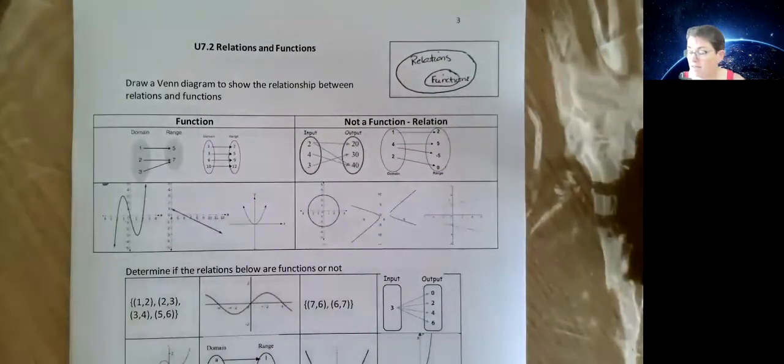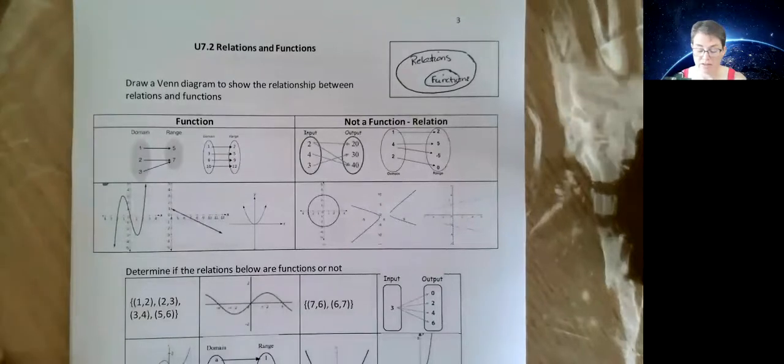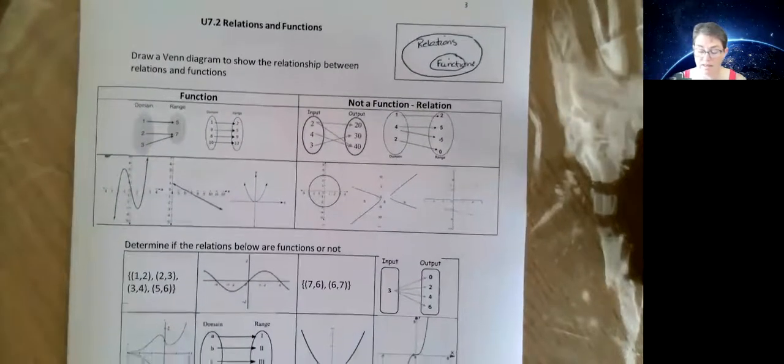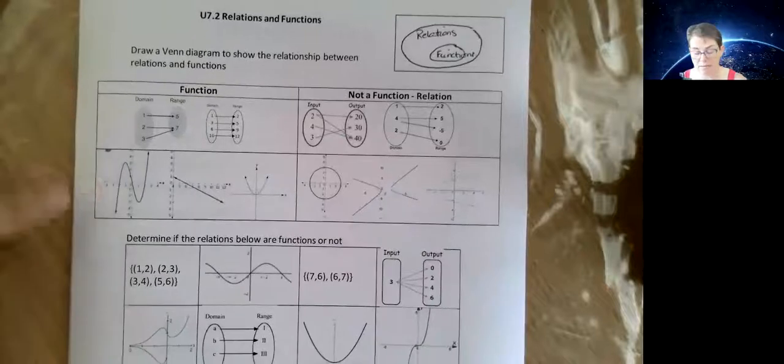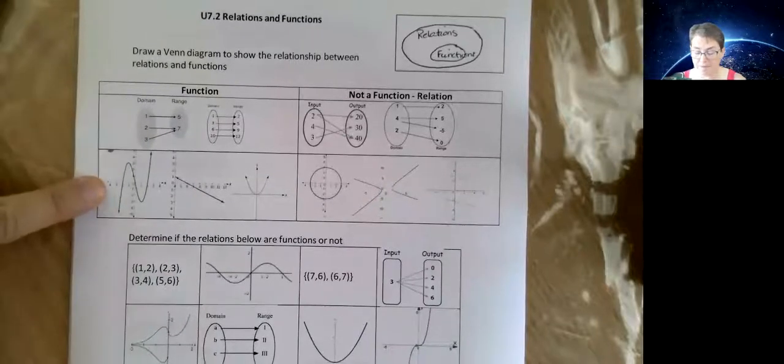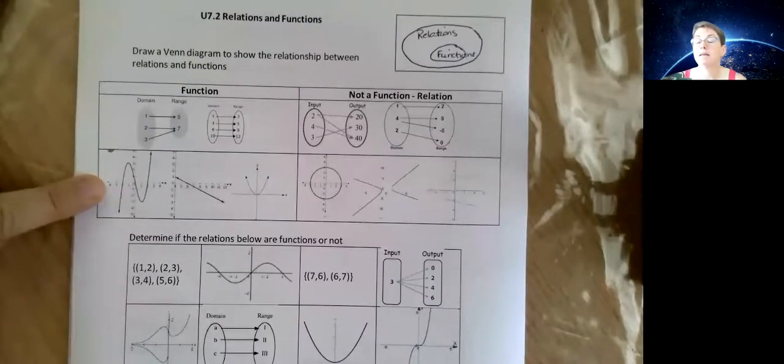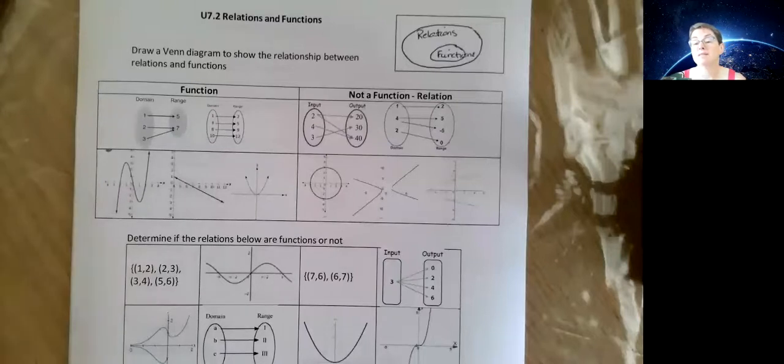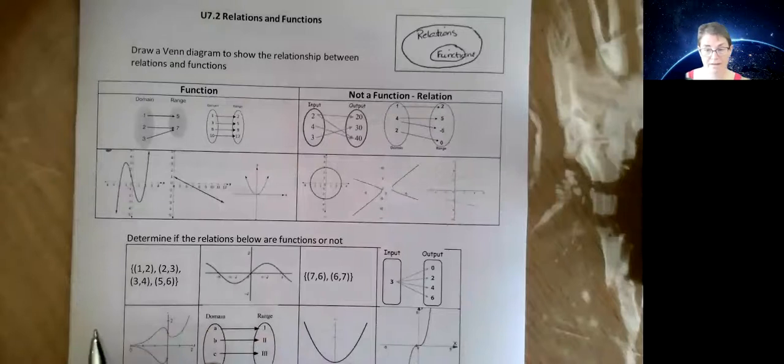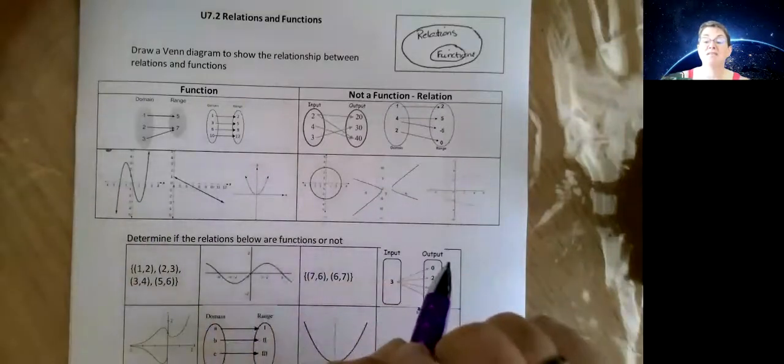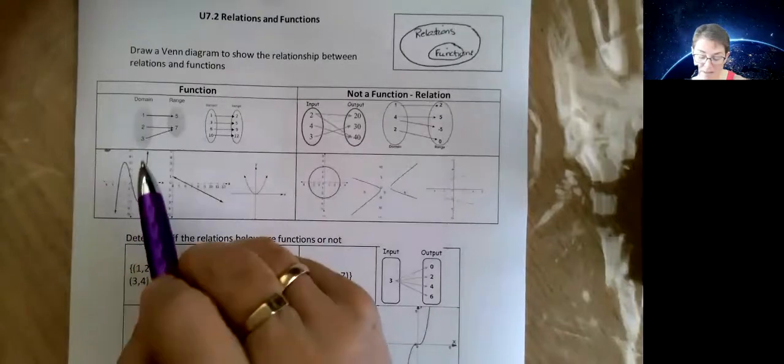So on the previous video we just looked at the set notation and how to tell the difference between functions and non-functions. Now we're going to look at the mapping diagrams and also some graphs. And I suspect one of these three ways is going to make really good sense to you. As I say, I'm personally really fond of diagrams, but these mapping ones are pretty simple.